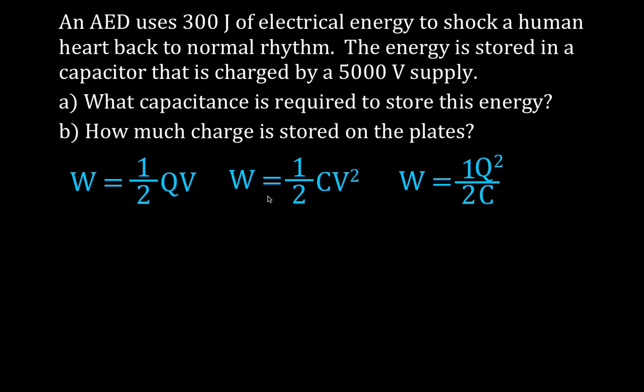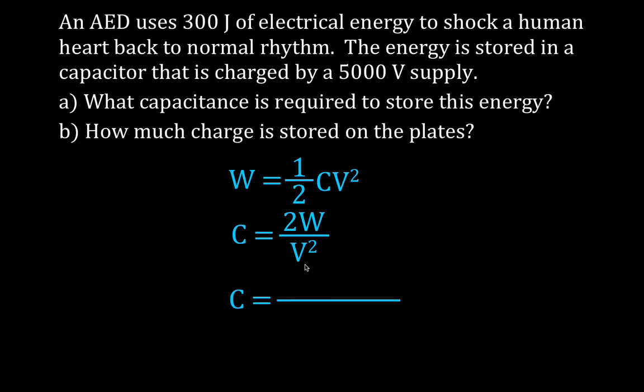So now what we're going to do is we're going to figure out what is the capacitance that's required. Now we're going to use this equation because we know the work is 300 joules and we know the voltage. So we're going to solve this equation for the capacitance. What I did was I took and multiplied both sides by 2, I get 2w, that gets rid of the 1 half, and I divide by the voltage squared. The capacitance is 2 times the amount of work divided by the voltage squared. I simply just plug the values in. The capacitance is equal to 2 times 300 joules divided by 5,000 squared. And that tells you that the capacitance of that capacitor would need to be 2.4 times 10 to the minus 5 farads. That's the capacitance that's needed to store that much charge with a 5,000 volt source.